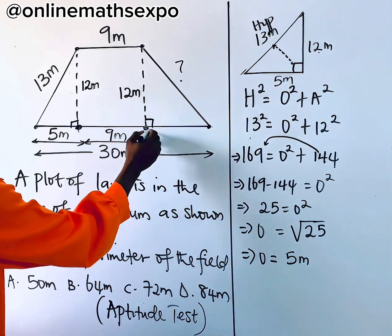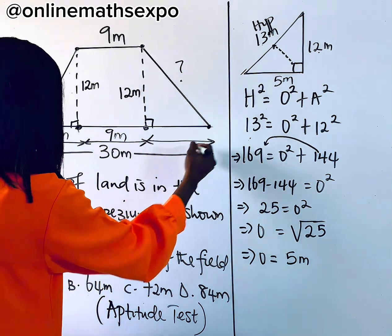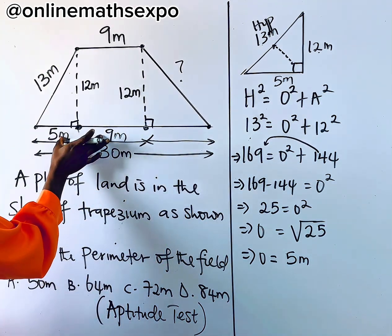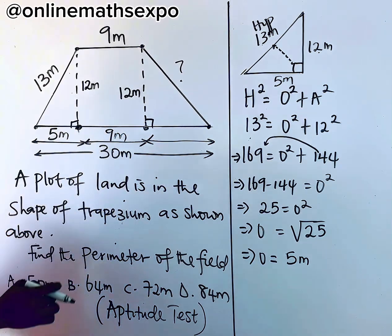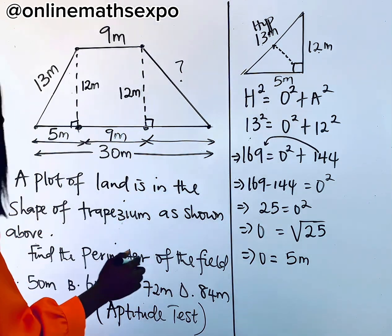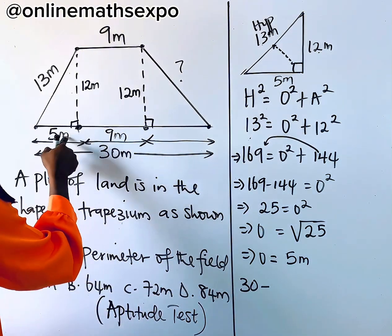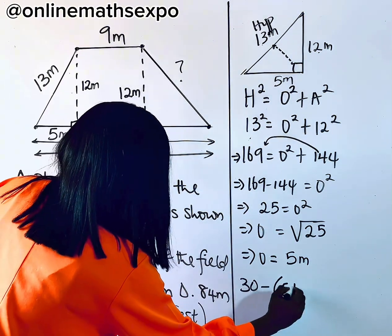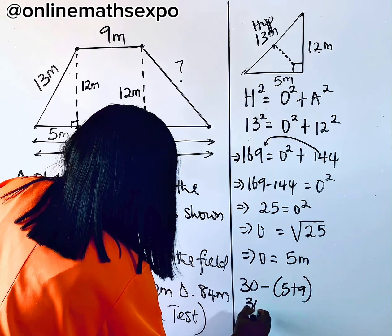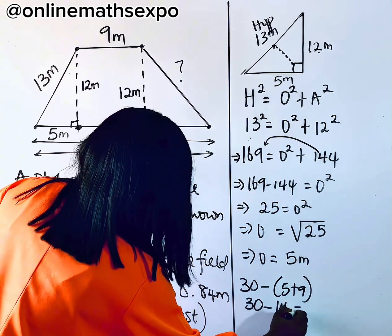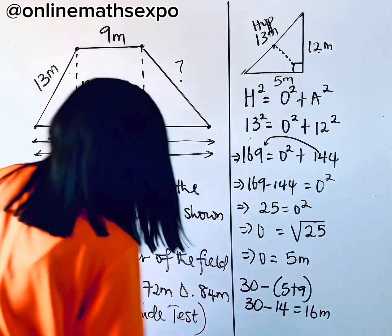So what do you do to get this tiny length, this part? You just need to add these two together and take it away from 30. So if you do that, you are going to have 30 minus, add these two. So we have 5 plus 9. So we have 30 minus 14 and that will give us 16 meters.